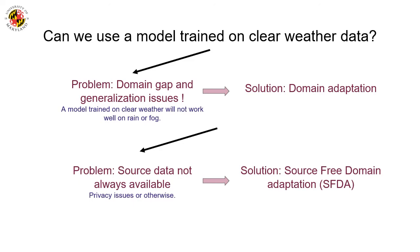A common approach in deep learning for handling lack of training data is domain adaptation. However, domain adaptation methods assume access to source datasets at all times, which can be prohibitive in terms of storage, memory, data corruption, and privacy concerns. Instead, in source-free domain adaptation, deep neural networks do not need access to the source dataset during the adaptation stage.